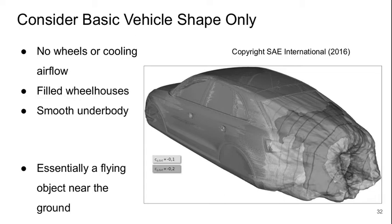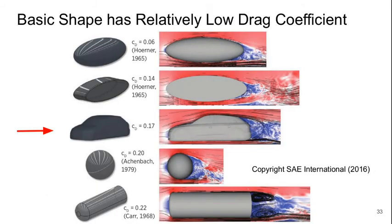This considers the basic vehicle shape — no wheels, no cooling air flow, nothing like door handles or side mirrors. The underbody is made to be smooth and the wheelhouses are filled in. So basically this is like a flying object near the ground. This is what we mean by the basic form, and this basic shape has a pretty low drag coefficient.